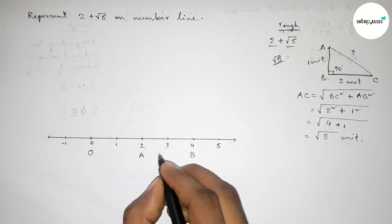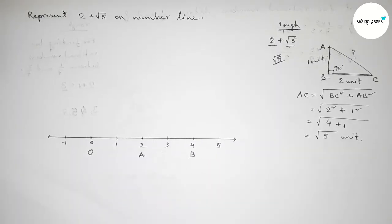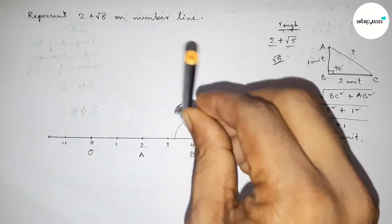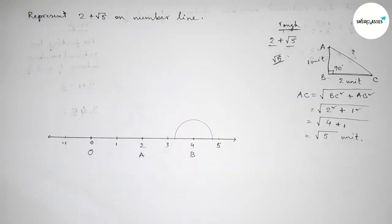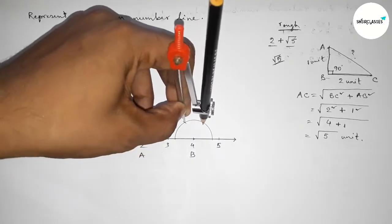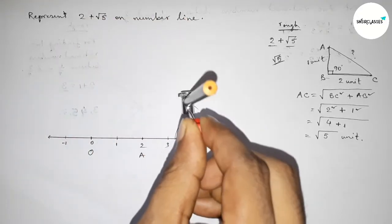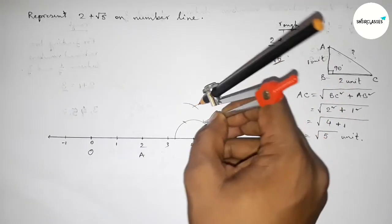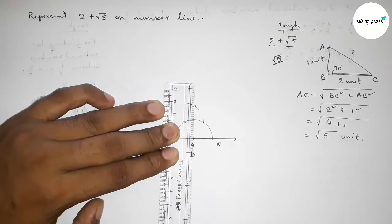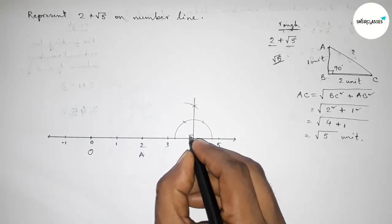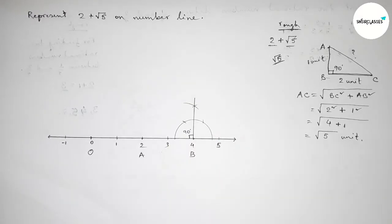Taking point B at position 2, which is 2 unit length from origin. Now we have to draw a 90 degree angle at point B using a compass. Taking any length, drawing an arc, then placing the compass at the same length to cut arcs at two positions, and drawing an arc with the same length to get a 90 degree angle at B.